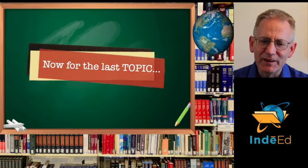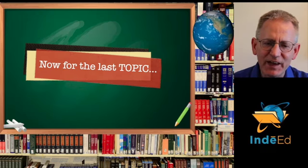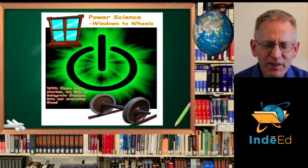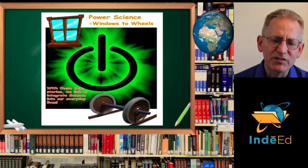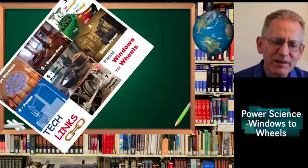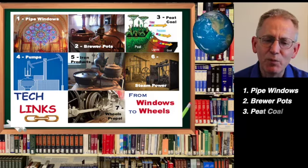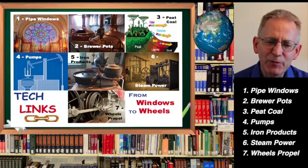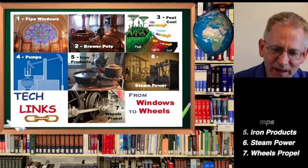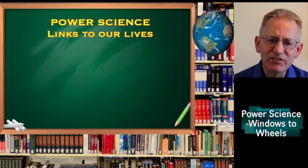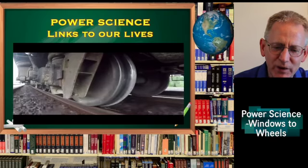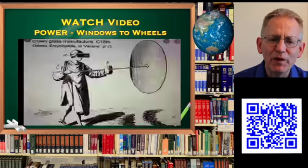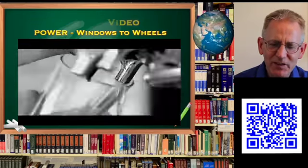Now for the last topic, which is responsible for bringing everything together, we use the true story of the power science from windows to wheels. With these links, we see how science integrates into our everyday lives. Here's the one-page summary. We're going to be talking about pipe windows, brewer pots, peat coal, pumps, iron products, steam power, and wheels propel. Power science links to our lives from glass windows to iron train wheels. Here's the link to the video that you'll want to watch called Power Windows to Wheels. Let's look at the seven steps.